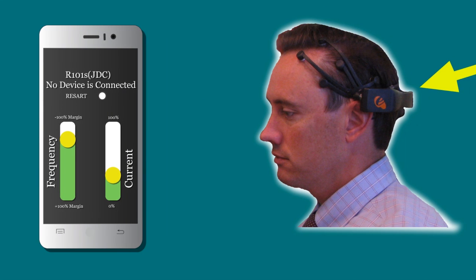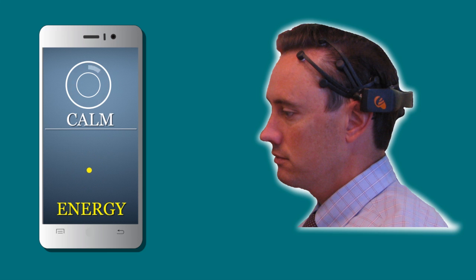The headgear wirelessly communicates with an app running on a smartphone to allow the user to select the desired mood or mental state to achieve.